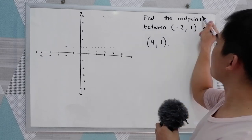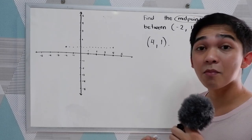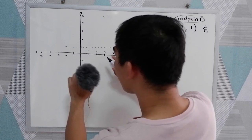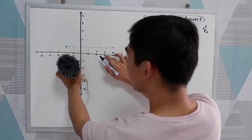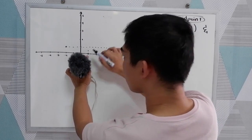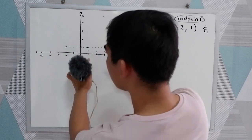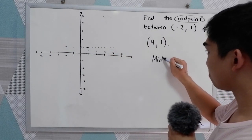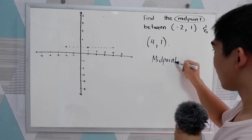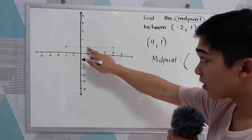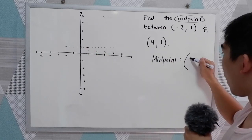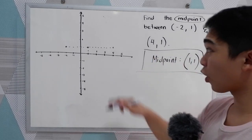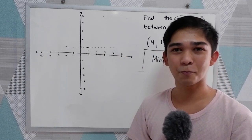Now get the midpoint — the middlemost point. So our middlemost point is 1 unit, 1 unit, so here. Our midpoint is 1, 1. So that would be our midpoint if we're going to plot on our partition plane.